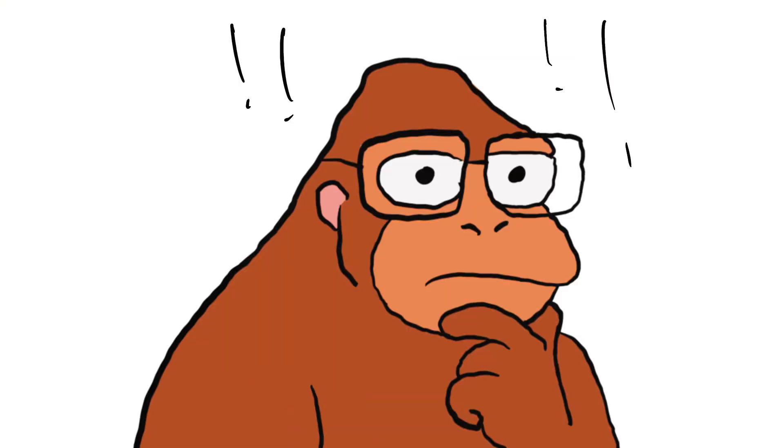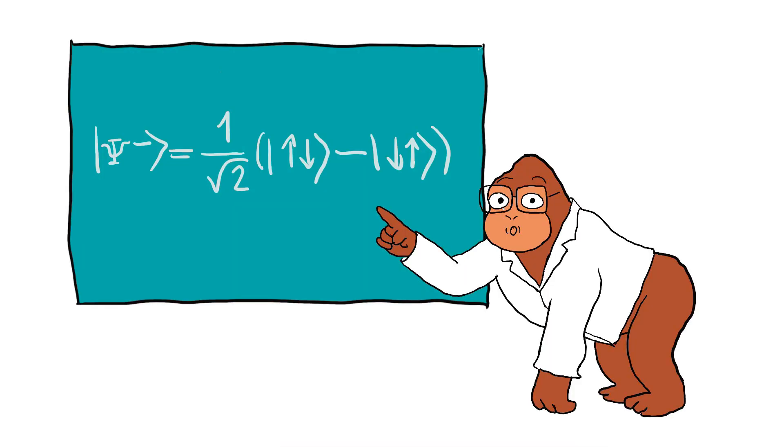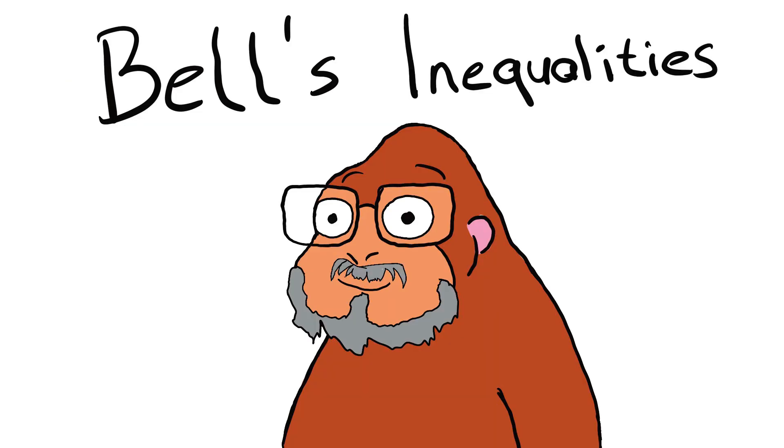Monkey asks, How did they prove something that cannot be seen? This is where John Bell enters the scene with a clever mathematical test he developed. Bell's inequalities.